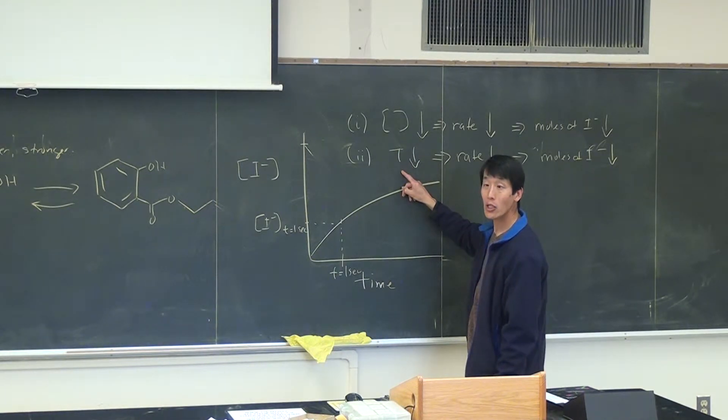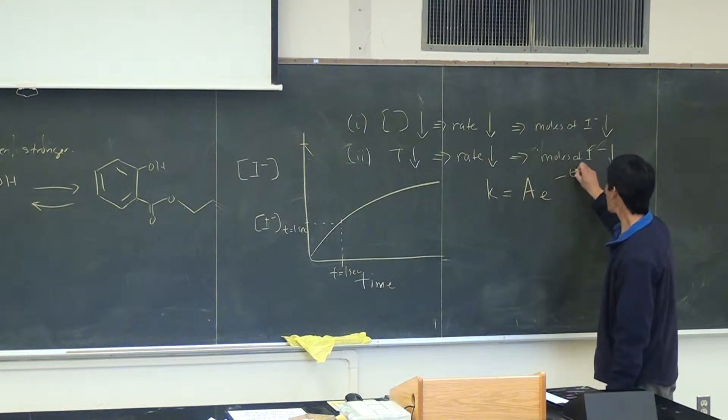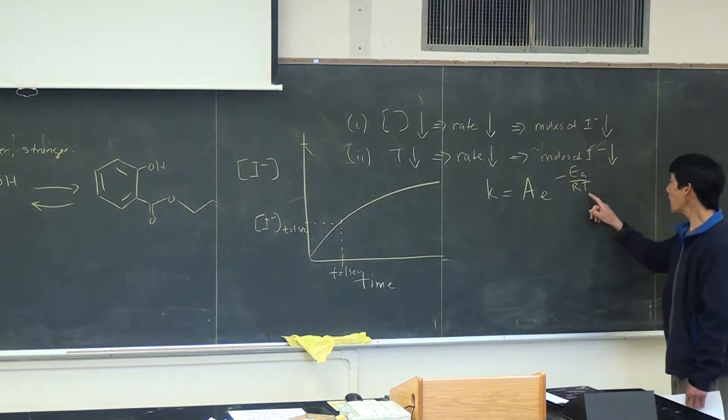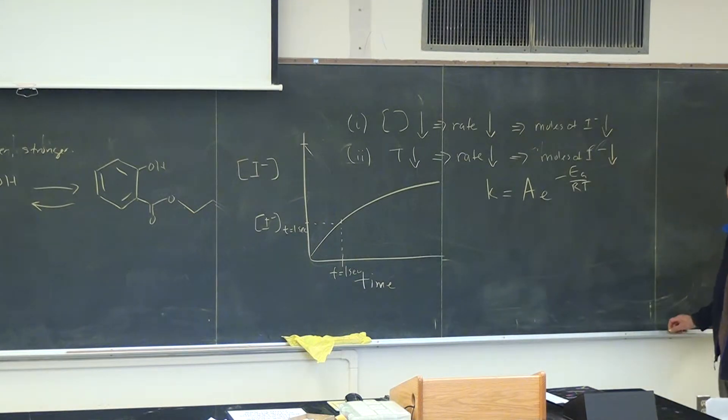that should change the rate constant of the reaction. And that's because of this equation, K is equal to A times E to the minus Ea over RT. This is the Arrhenius equation. Note that as the temperature changes, the rate constant K is going to change. Okay, so change the temperature, that changes the rate constant K.